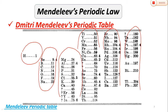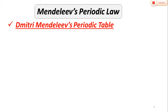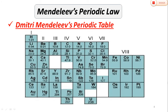If you note this arrangement, in some places a question mark is placed. This question mark means that scientists did not know the elements that should go there. Mendeleev was so sure that there would be elements with specific properties to fill those gaps, so he left question marks for them.